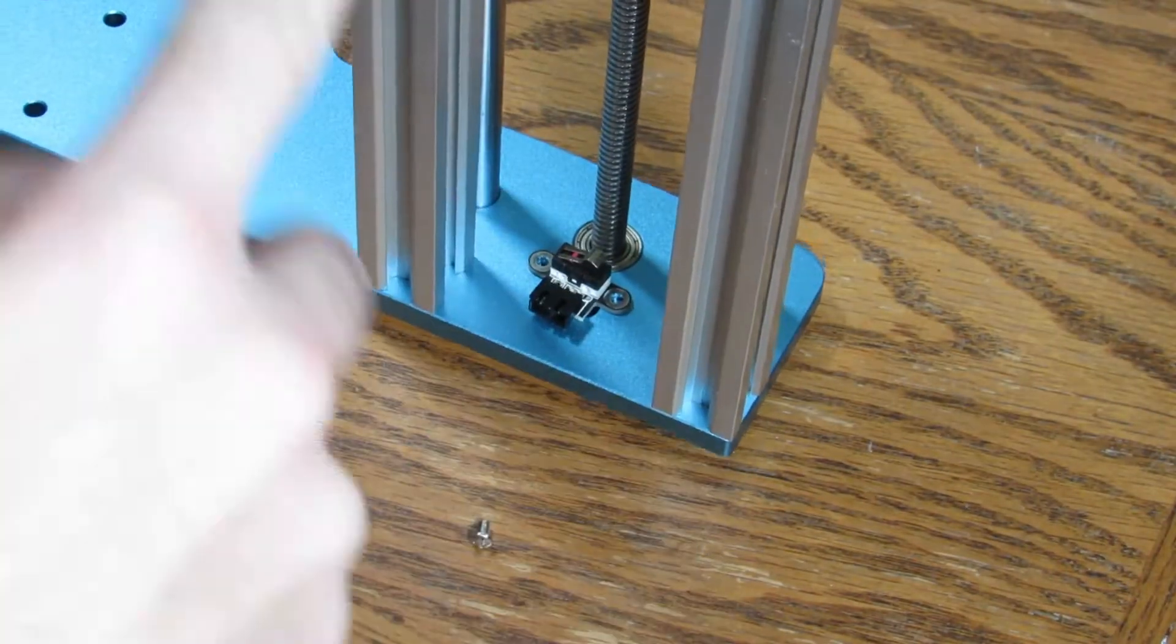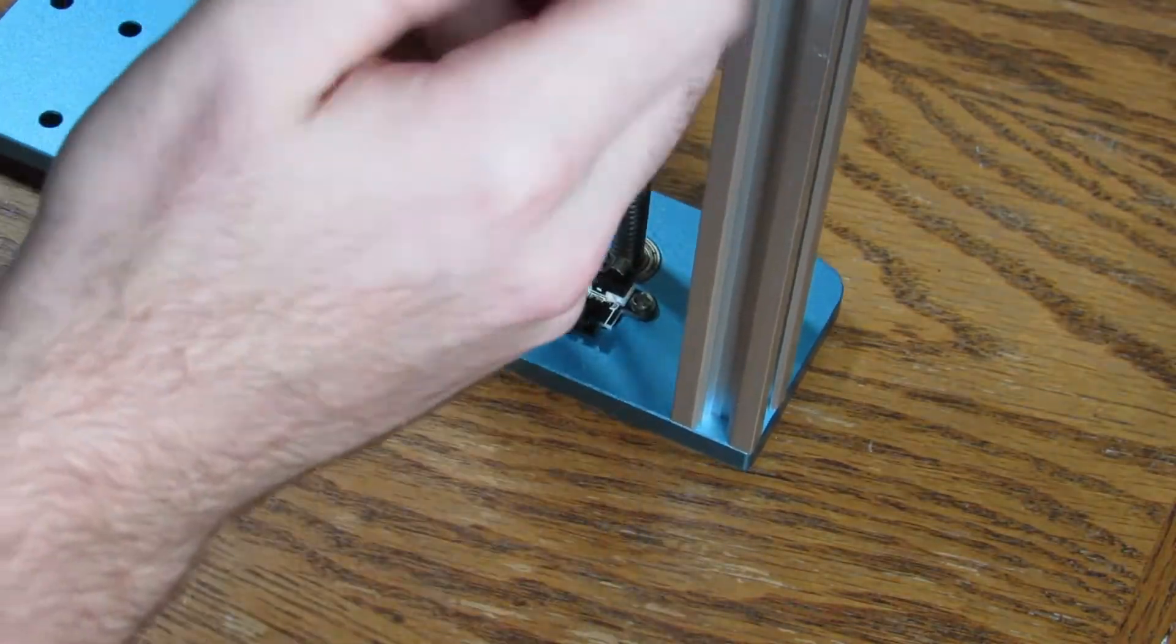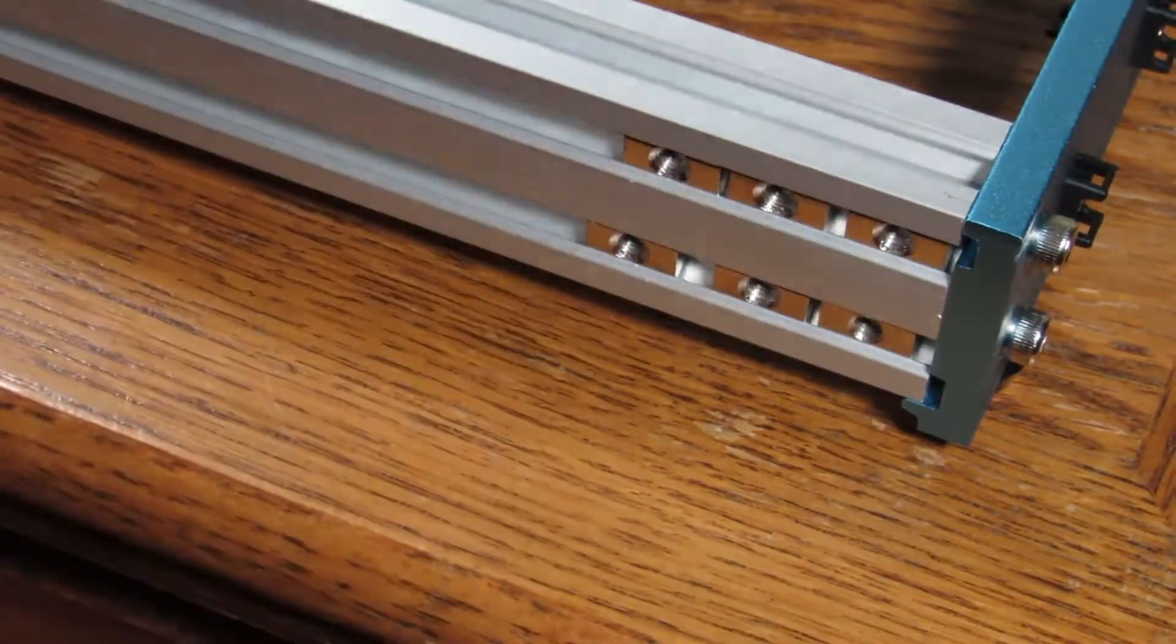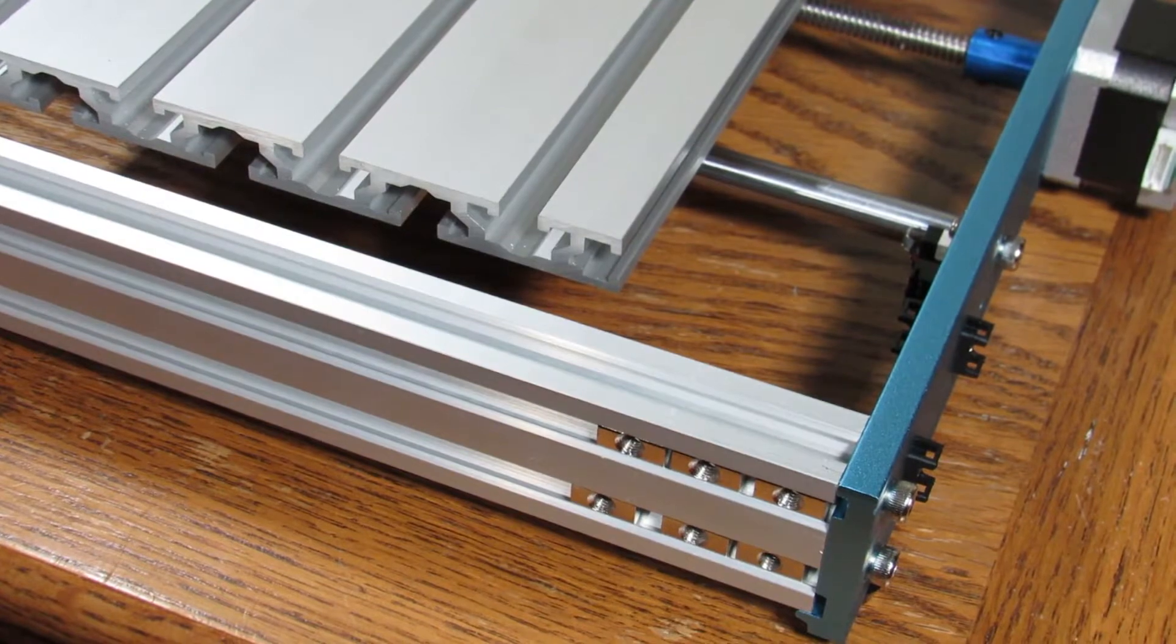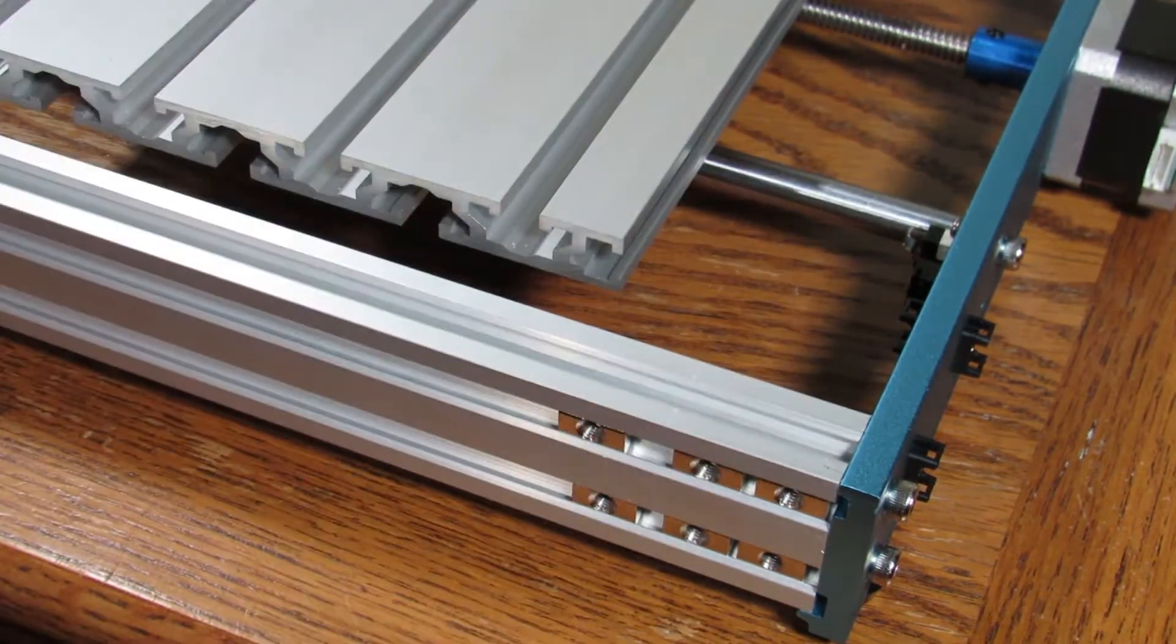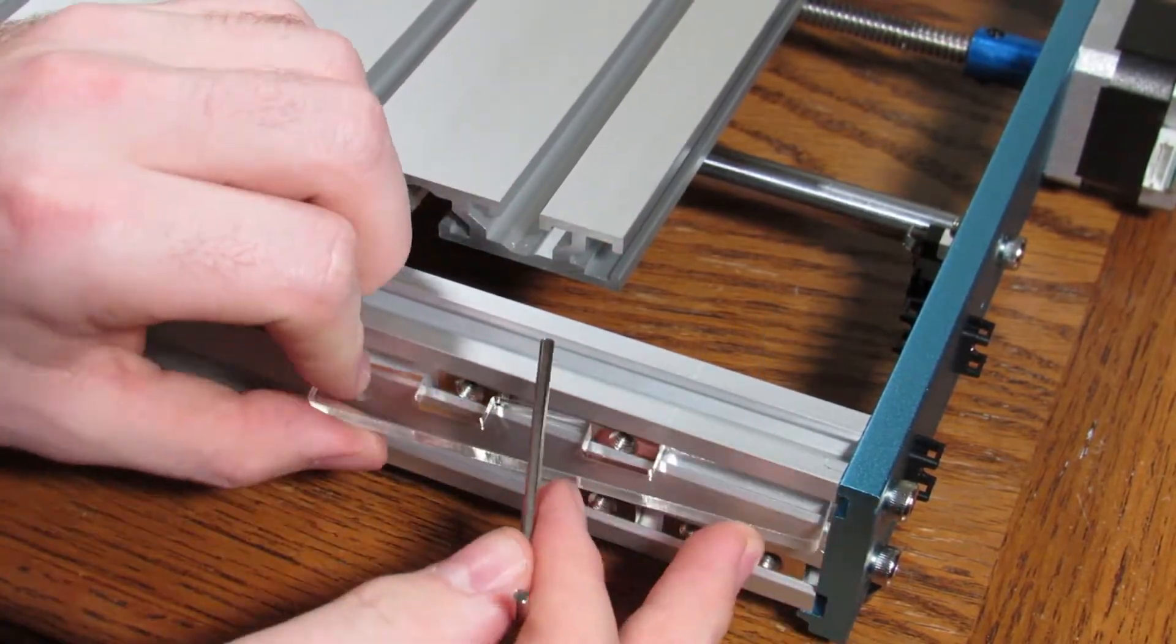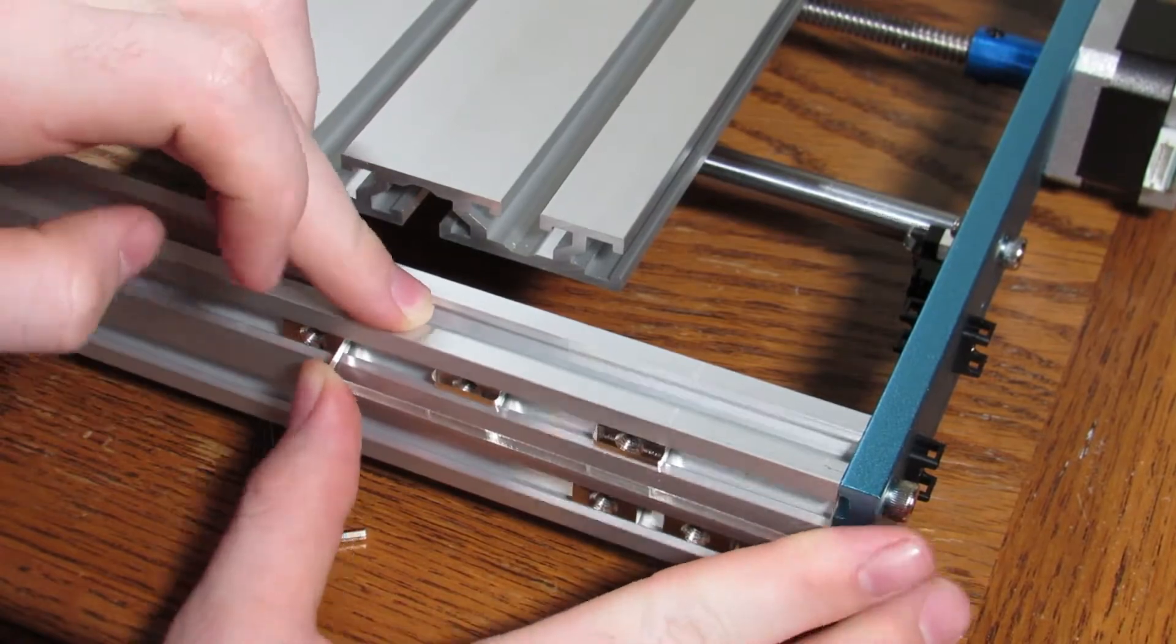Now let's install the other side limit switch. This one does not have spacers. It just connects directly to the aluminum plate there. Now for the gantry attachment, we want to use this little acrylic piece. The way I found simplest is to use a tiny little allen and go ahead and move those, I guess you could say nuts in place.